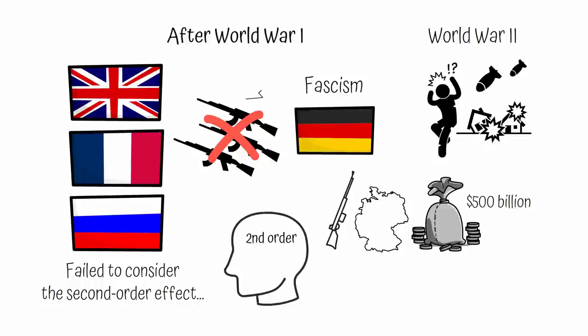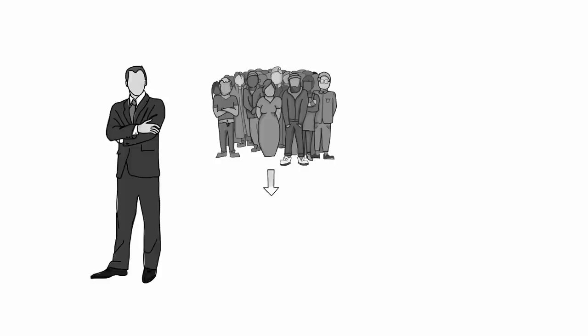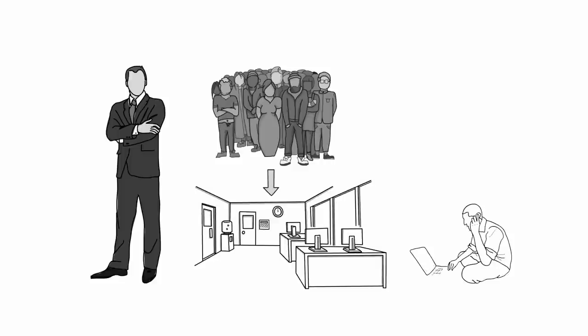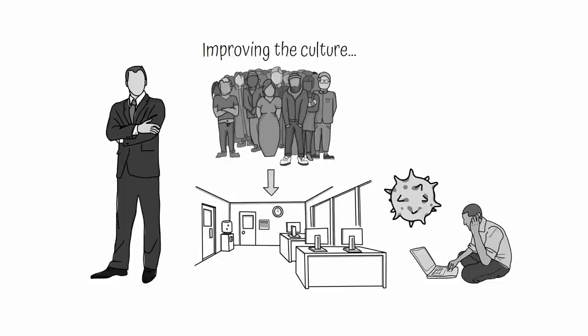Second order thinking gets you to think beyond the outcome you're going for and consider the reaction to that outcome. It's important to incorporate second order thinking in your decisions to avoid disastrous unintended consequences that come from second order effects. If you're a CEO of a company and you demand that everyone comes back to your office after a year from working at home thanks to COVID, you might get what you want, namely improving the culture with everyone back together. But your actions might have the second order effect of getting people to realize how much they hate commuting to work and miss the convenience of working from home. Those people might leave the company, which could ultimately destroy the culture.